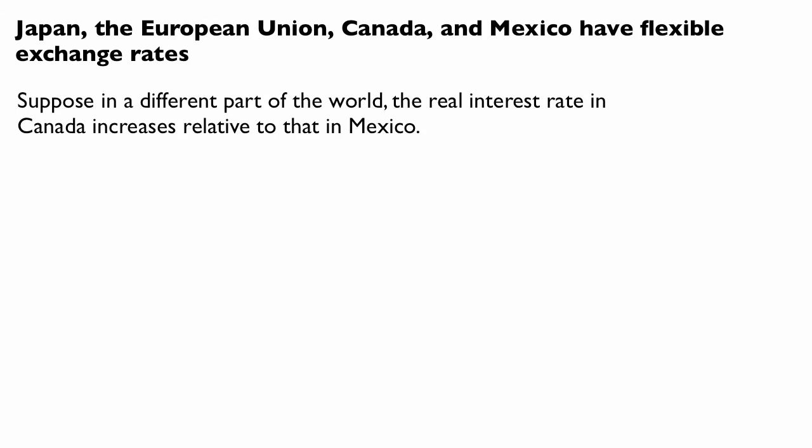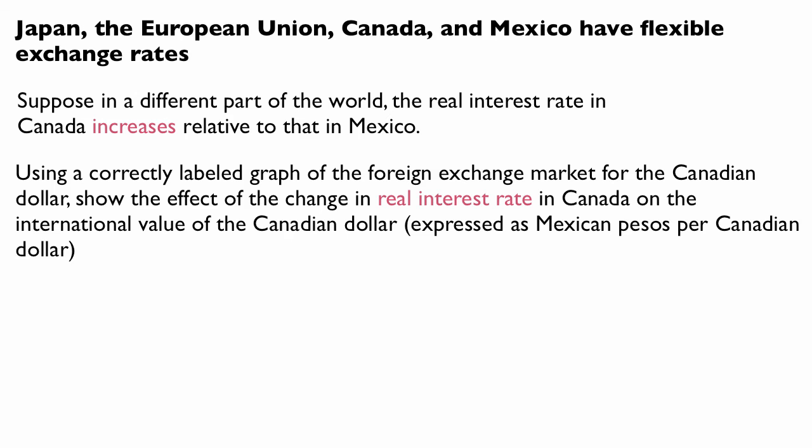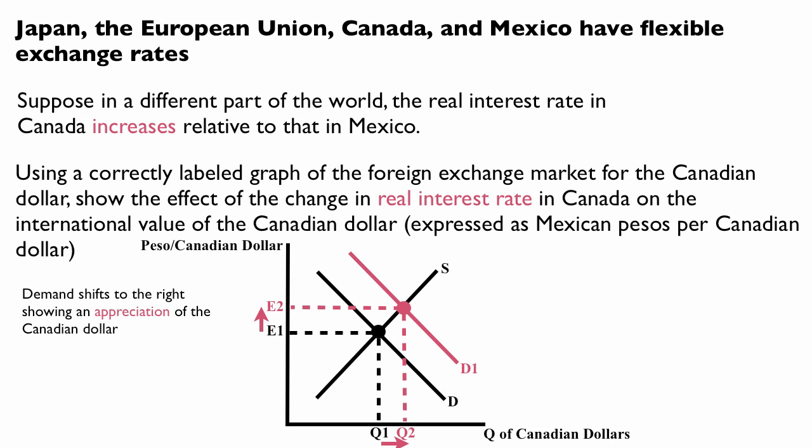Suppose the real interest rate in Canada increases relative to that in Mexico. Using a correctly labeled graph of the foreign exchange market for the Canadian dollar, show the effect of the change in real interest rate in Canada on the international value of the Canadian dollar expressed as Mexican pesos per Canadian dollar. The demand shifts to the right, showing an appreciation of the Canadian dollar.